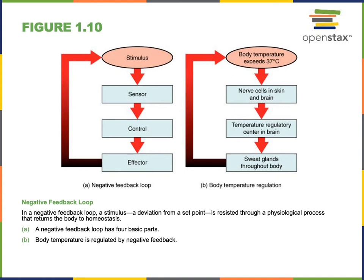A sensor or receptor detects a change in the variable, monitoring the variable — in this case, the temperature of the body. For this example, the sensor would be the thermoreceptors, which are located in the skin as well as in a part of the brain known as the hypothalamus. Thermoreceptors in the skin and hypothalamus are monitoring body temperature and would detect that the temperature is increasing, detecting the stimulus.